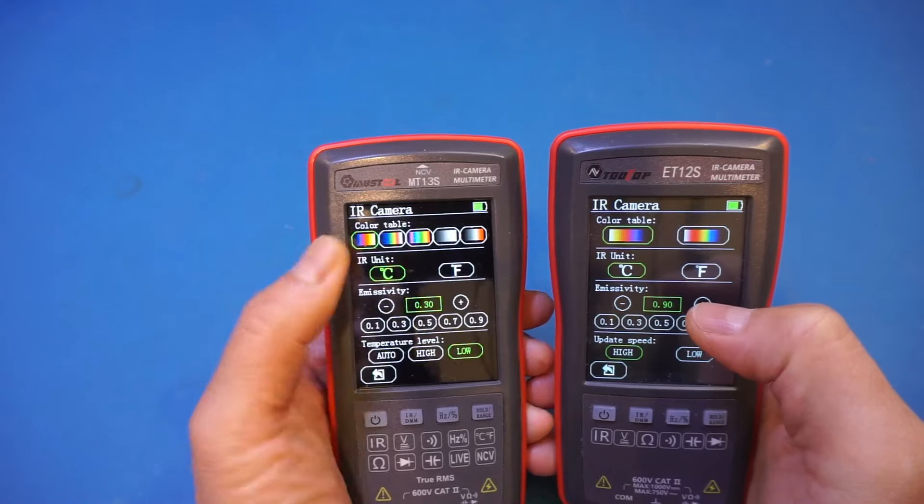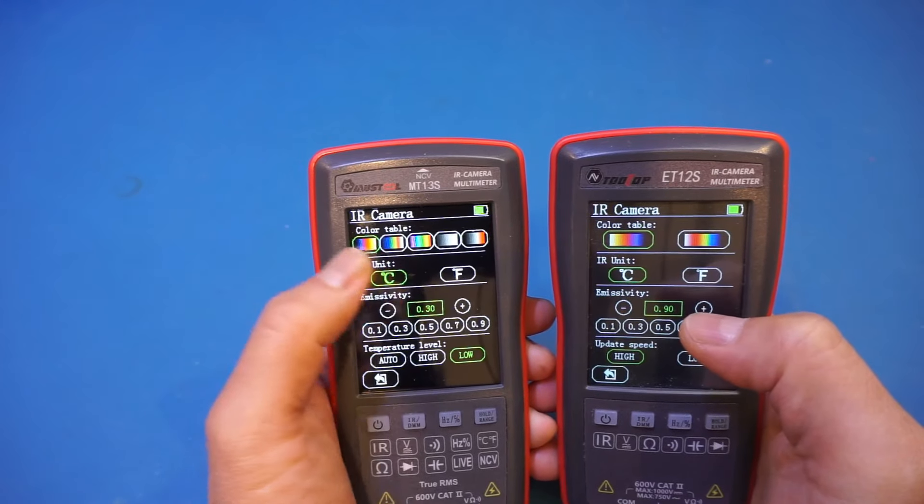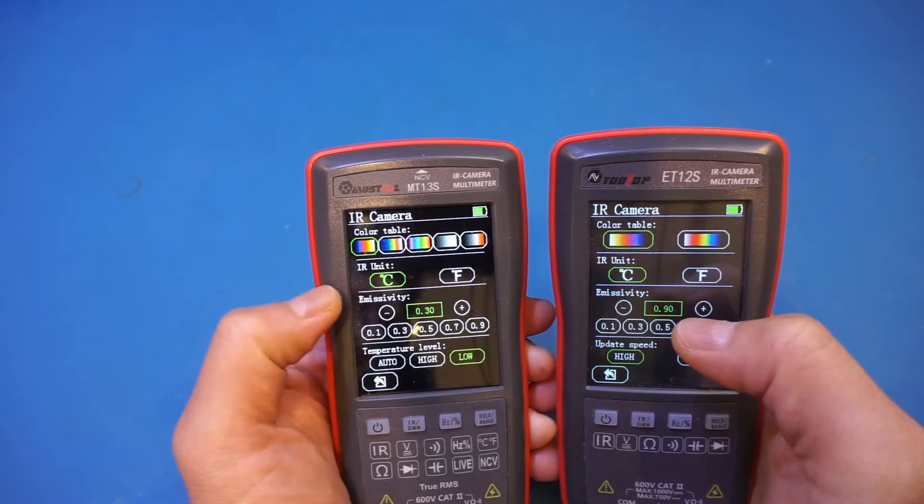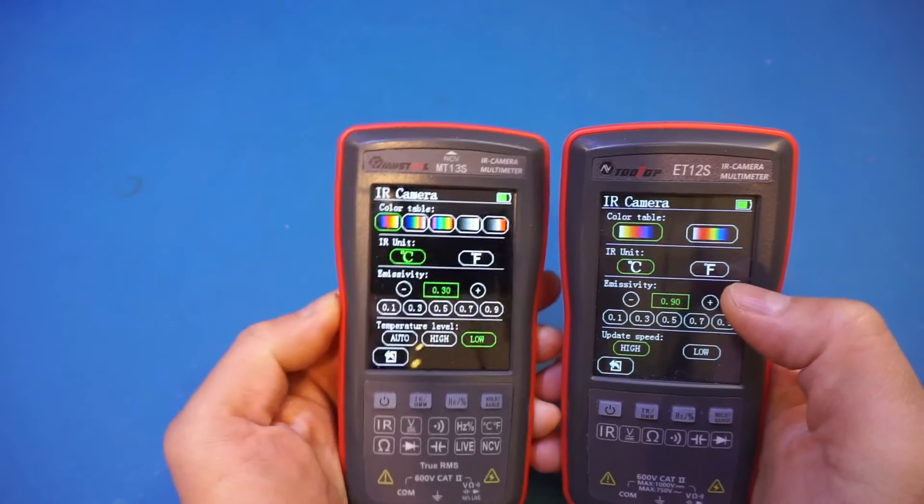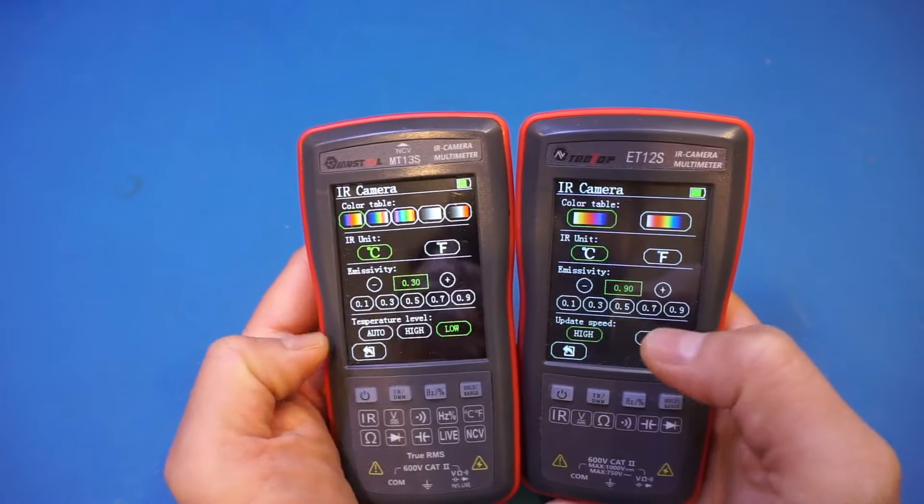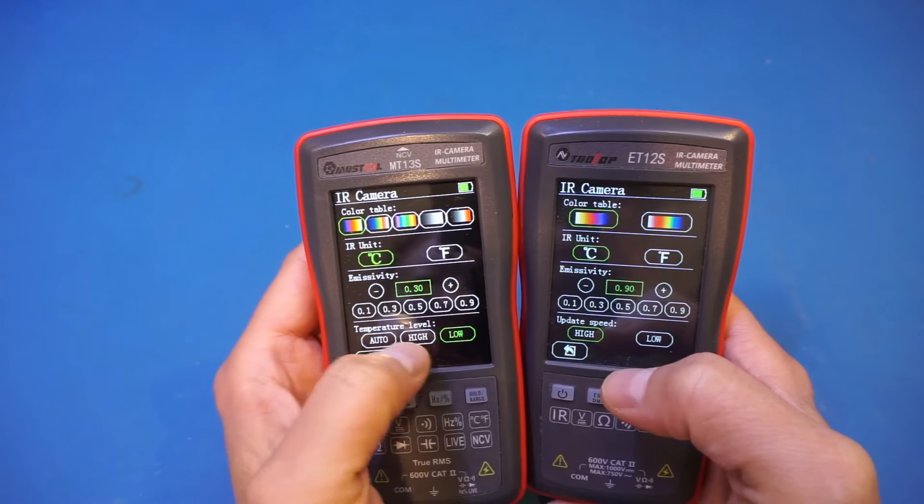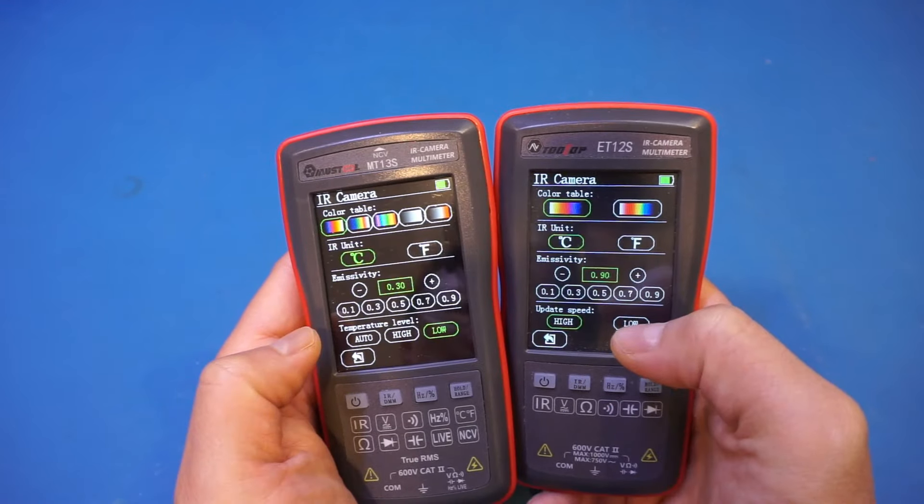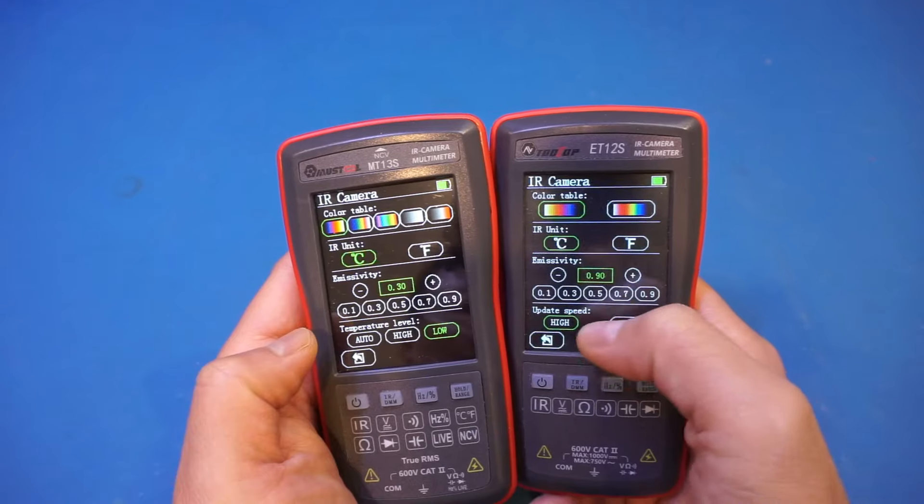Yeah, you can see. On this 13s, we now have different color palettes. We have a few more of them. And perhaps the most important one is that we now have different temperature levels, high and low and auto. In the 12s, we only have the update speed. So I assume this temperature level is for selecting the temperature range you are currently measuring.